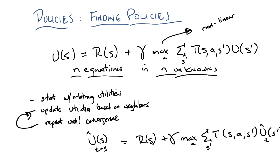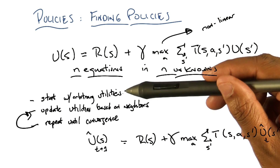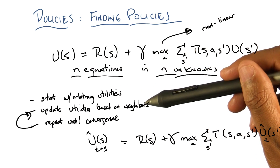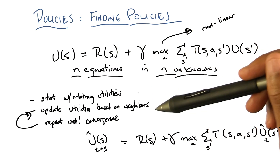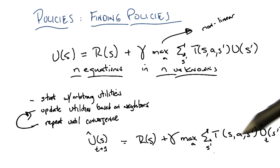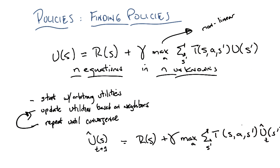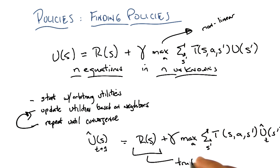Now, why is that going to work? I just made up the u-hats — they started as arbitrary utilities. The next step about updating utilities based on neighbors makes some sense because a neighbor is any state that you can reach, determined by the transition function. But all I'm doing is reaching states that are also made up of arbitrary utilities. So why should that help me? Well, it's because of this value right here — this is actual truth.